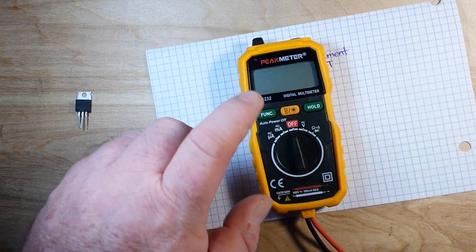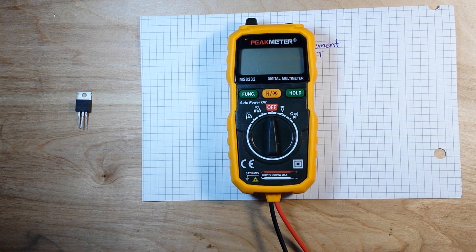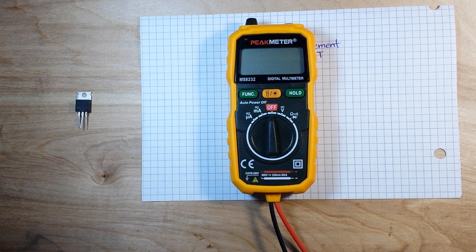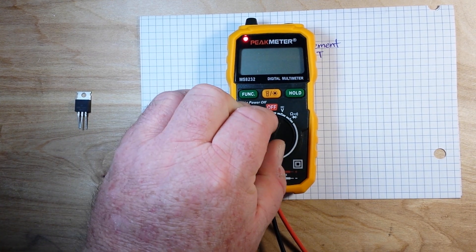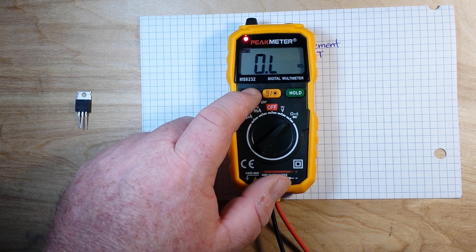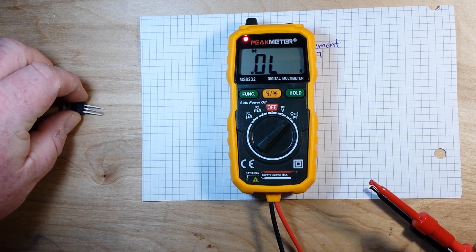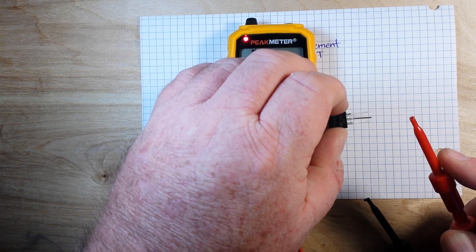All you need is a cheap meter, and they don't come much cheaper than this. This is like nine dollars from Amazon, which means it's probably four dollars from Banggood or AliExpress. So stick your cheap meter in diode mode.